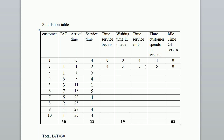For customer 3: arrival time is 2nd minute, but the previous customer ends service at the 6th minute, so service begins at 6th minute. Waiting time in queue is 6 minus 2 equals 4 minutes. Service time is 5 minutes, so time service ends at 6 plus 5 equals 11th minute. Time customer spends in system is 4 plus 5 equals 9 minutes. Idle time of server is 0.